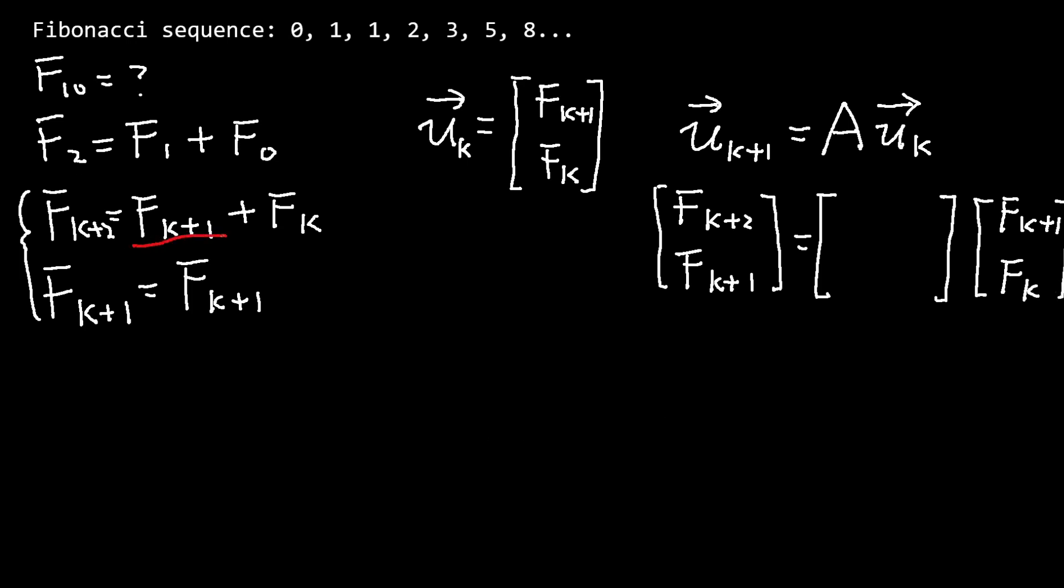The matrix A is the coefficient matrix of our system of equations. So the first row is [1, 1] and the second row is [1, 0].